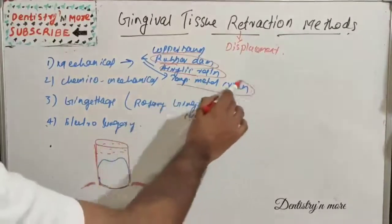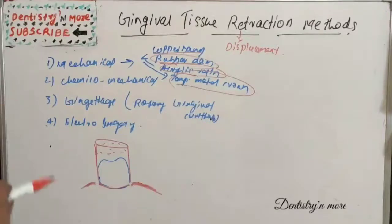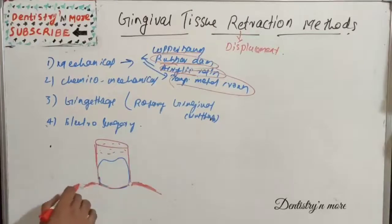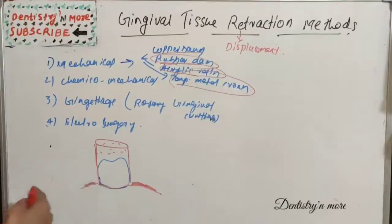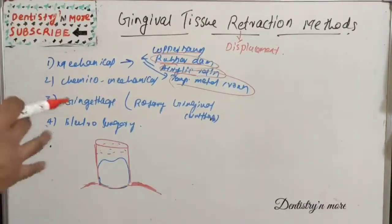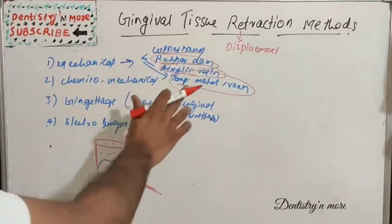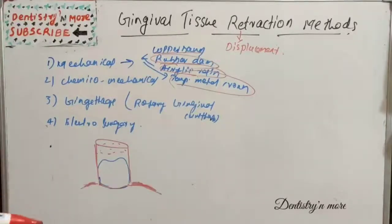Temporary metal crowns filled with thermoplastic stopping material can also be used. First, select a correct size, trim to conform to the gingival contour, and smooth the margins. Fill it with impression compound, and under occlusal pressure it is forced into the predetermined position. Excess material displaces the free gingiva. Trim without excessive pressure, cement with temporary cement for 24 hours, and make the final impression at the next appointment.